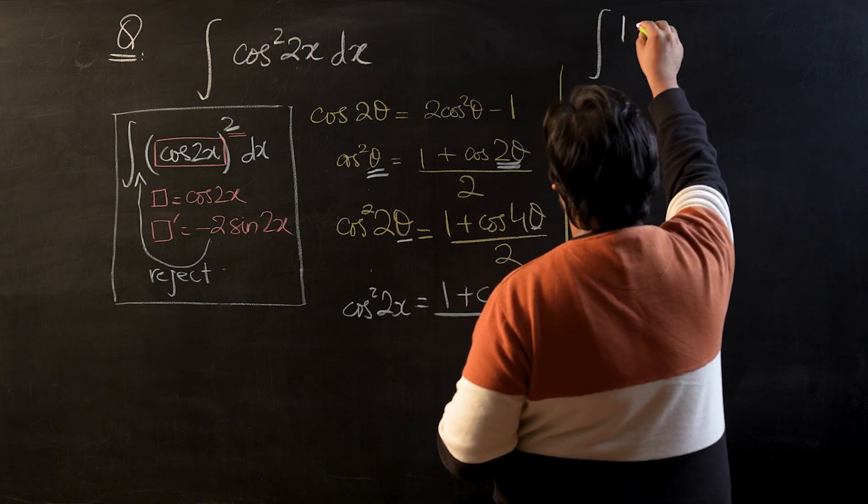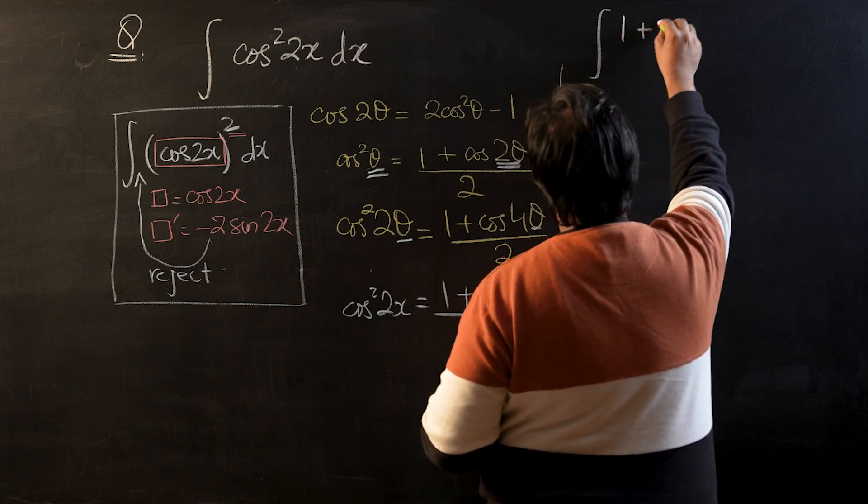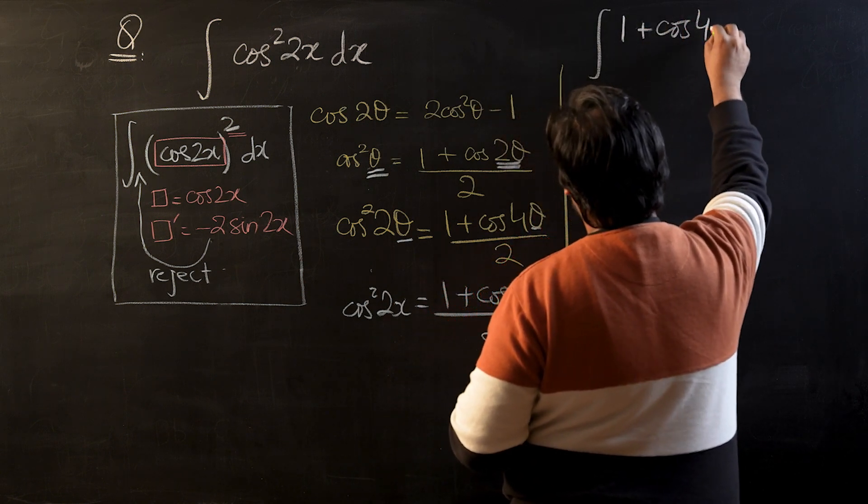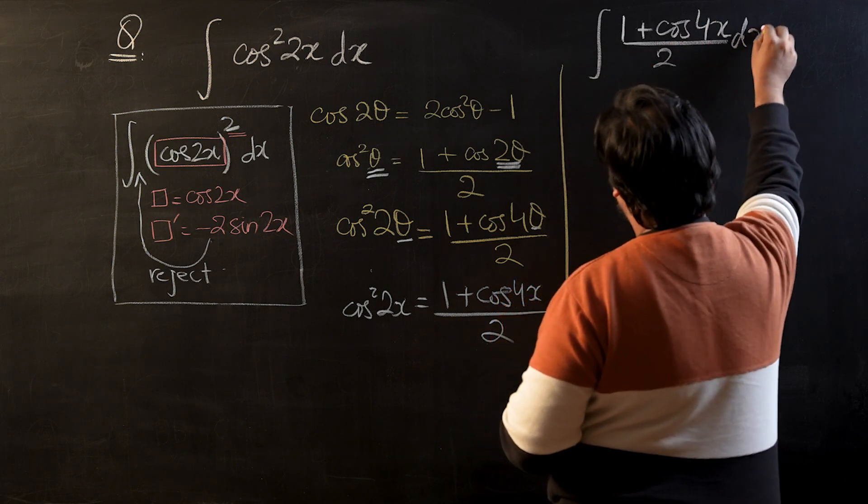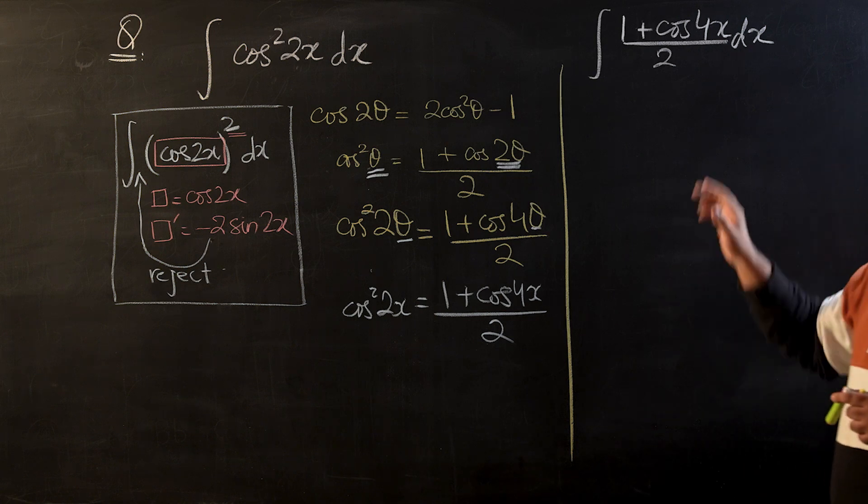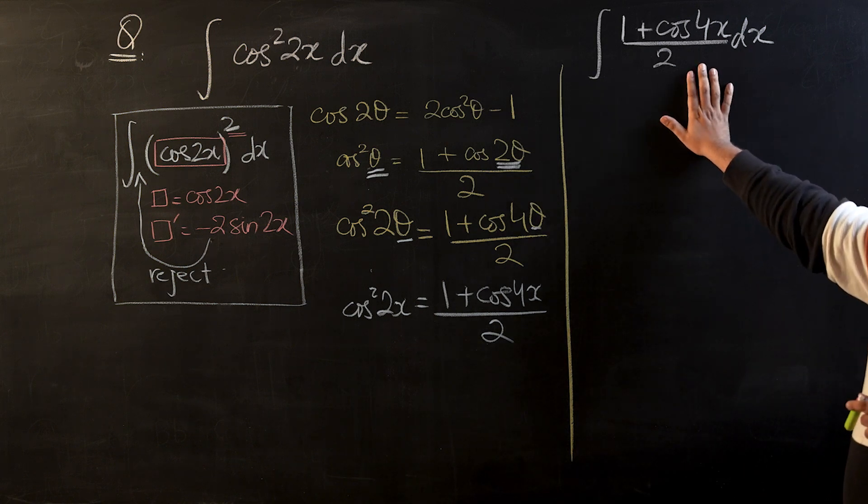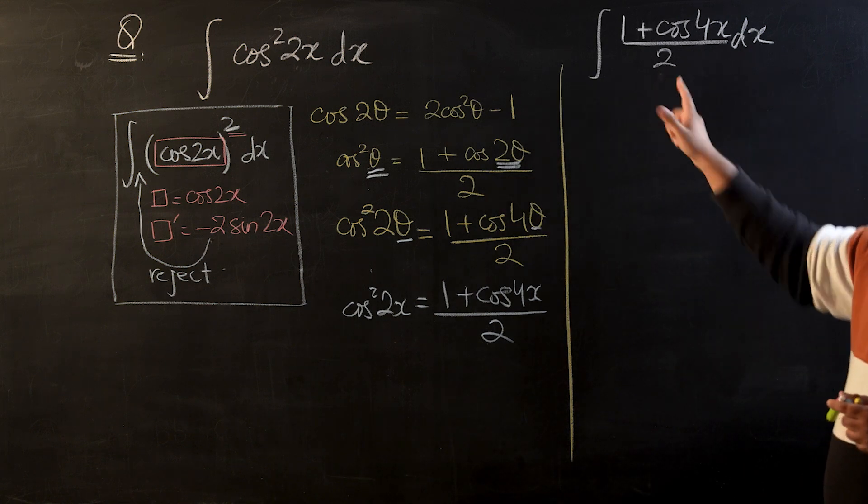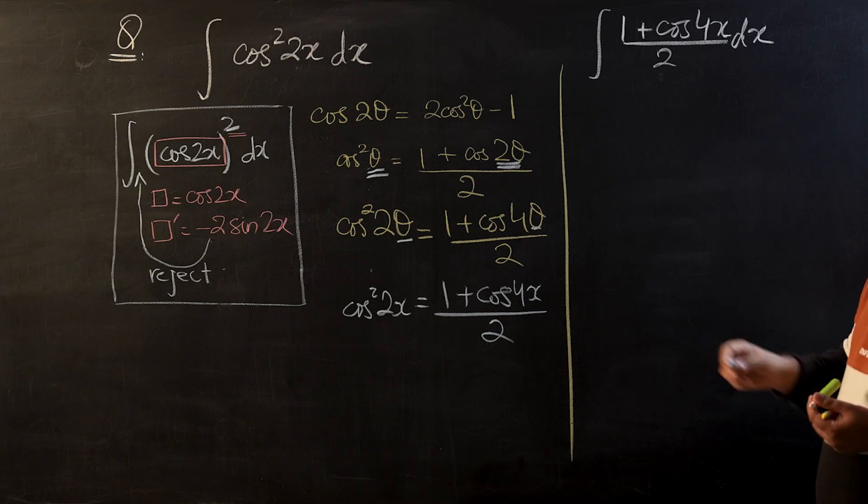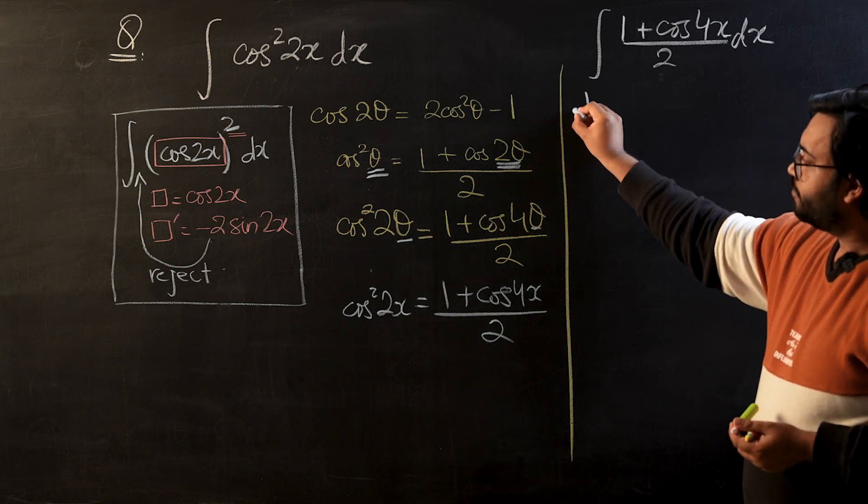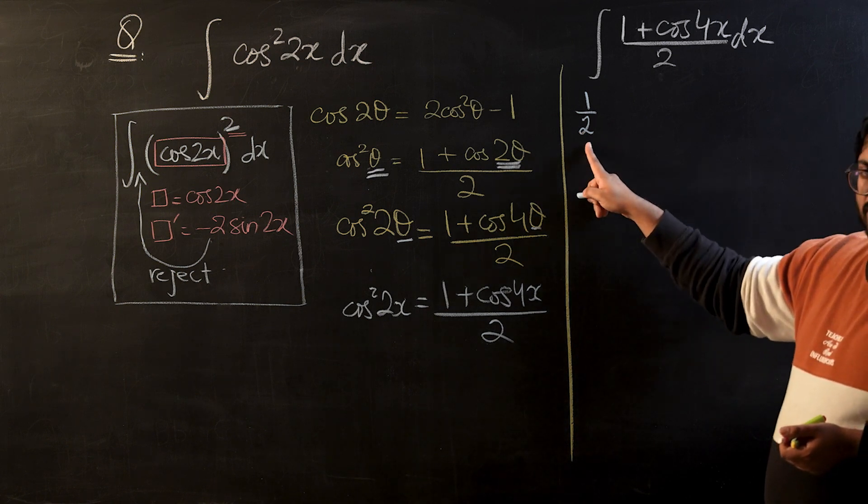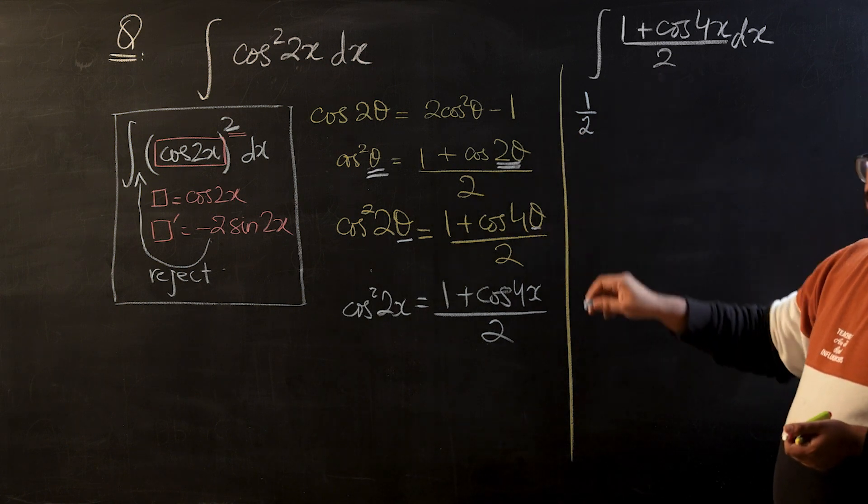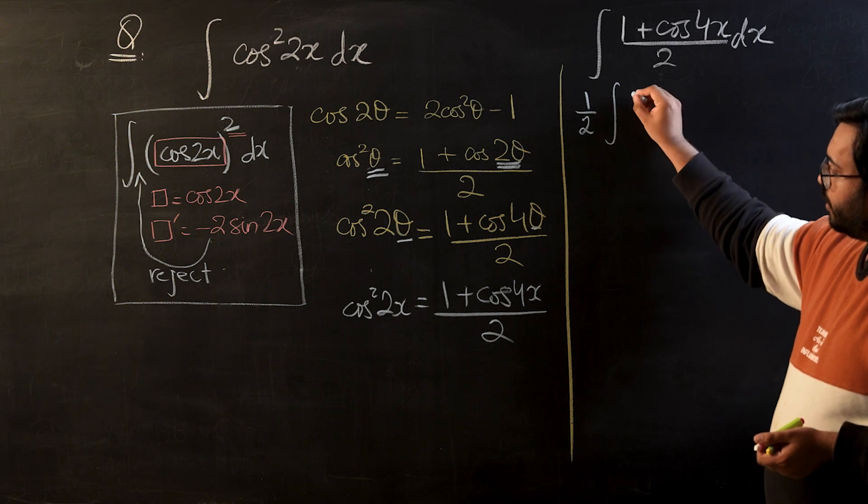This will become ∫(1 + cos(4x))/2 dx. Now we can see the 2 is common in the denominator. We are going to take this 2 outside the integral sign - we are allowed to take constants which are common outside the integral sign.